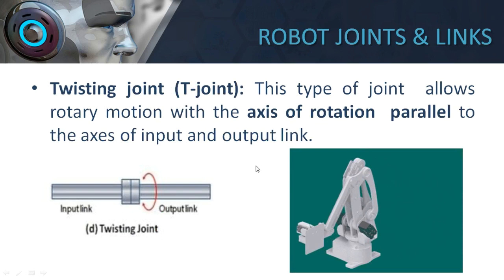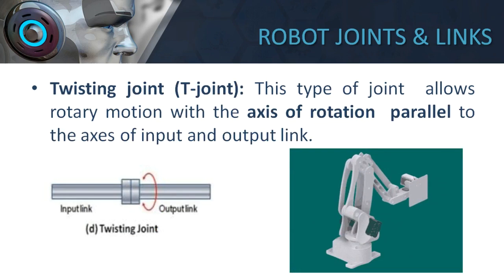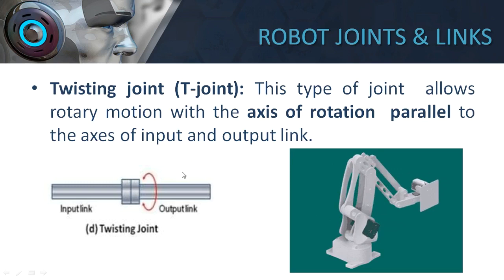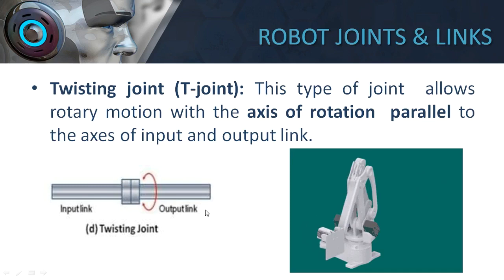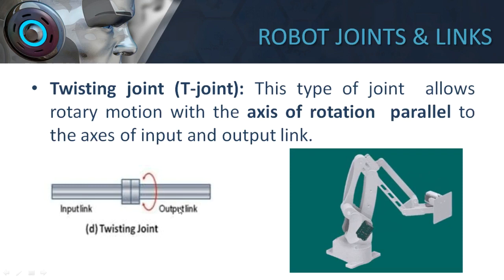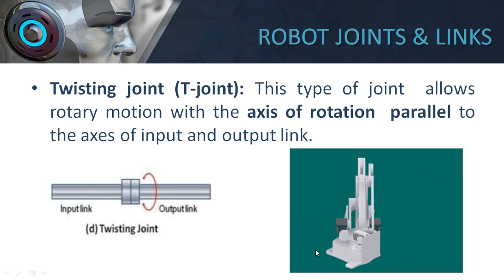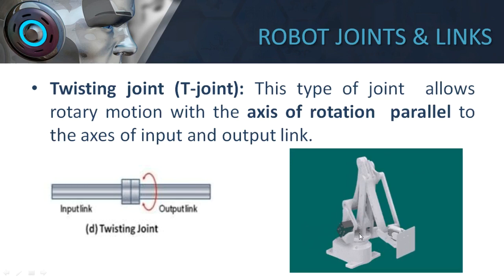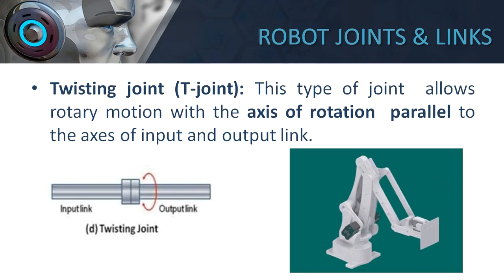The next type of joint is the twisting joint or T-joint. You can imagine twisting around your hips. This type of joint allows rotary motion with the axis of rotation parallel to the axis of the input link. The output link rotates parallel to the axis of the input link. In the animation you can see the robot rotating its entire body — it is installed at one particular location and around that axis the entire body is rotating, and this is achieved by the twist joint.